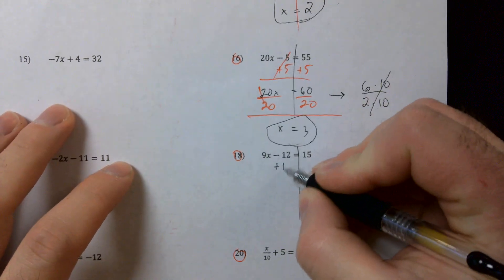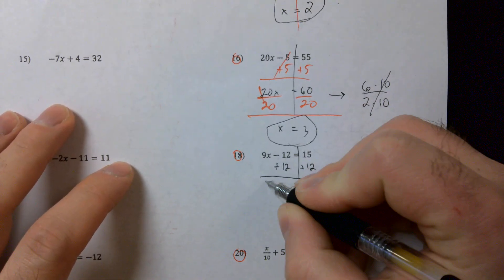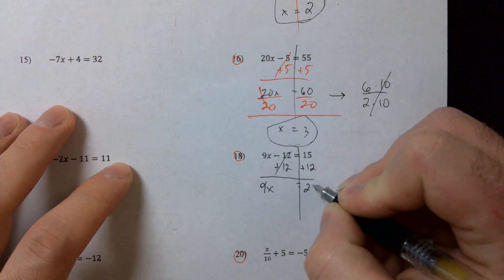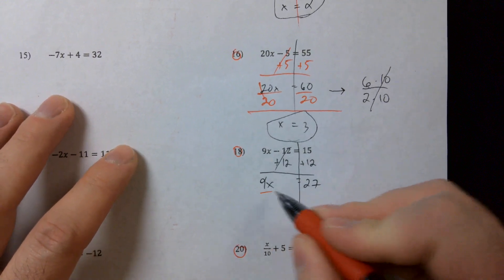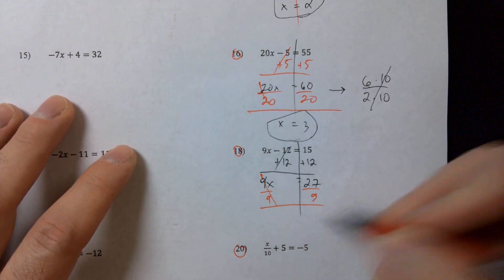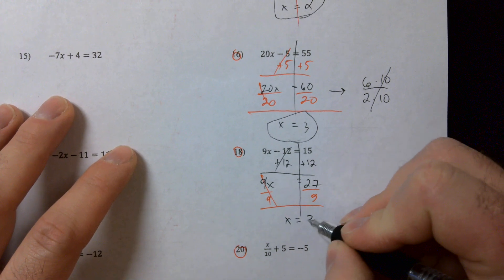Number eighteen, I'm going to add twelve, add twelve. I get nine x equals twenty seven. And how many times does nine go into twenty seven? Three times. You guys are killing it. Good.